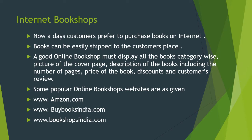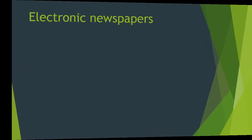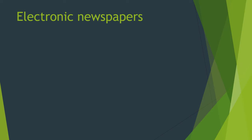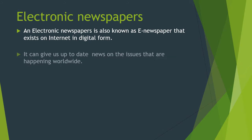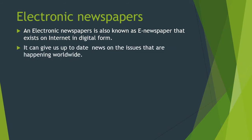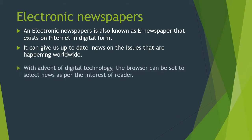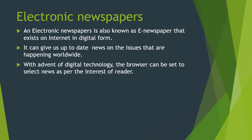Electronic newspaper is very popular because nowadays everyone has a mobile, so it's easy to get news within seconds about what is happening in the world. An electronic newspaper, also known as an e-newspaper, exists on the internet in digital form. It can give us up-to-date news on issues happening worldwide. With the advent of digital technology, browsers can be set to select news as per the interest of the reader.